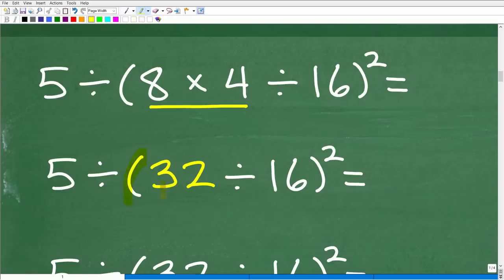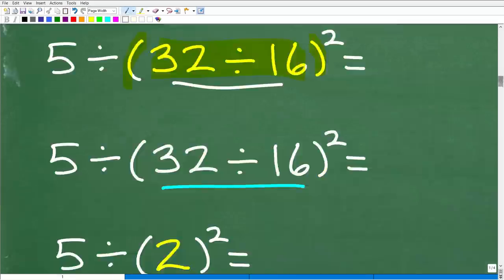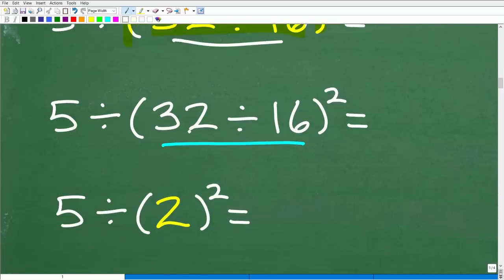So, now we have 32 divided by 16 squared. All right, but we're not done with the parentheses, right? There's still stuff to do inside the parentheses. So, pretty clearly, we have to take care of 32 divided by 16, which, of course, is going to be 2. All right, 32 divided by 16 is 2. So, this is where we're at right now. So, we have 5 divided by 2 squared. Now, there is, we still have our parentheses, but there's nothing more, there's nothing else to do inside the parentheses. So, now you can start looking on the outside of those parentheses.